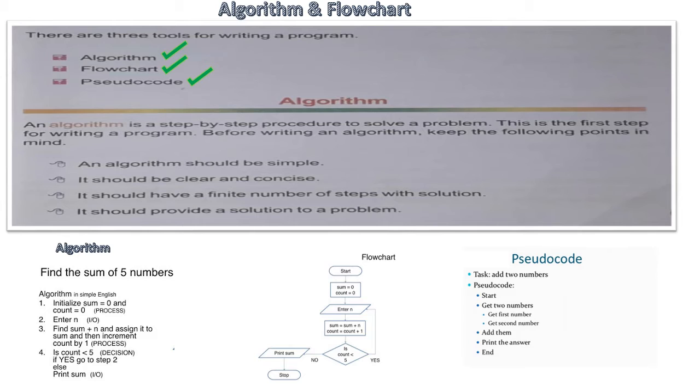Algorithm is the first step for writing a program. We have to keep the following points in mind before writing an algorithm. An algorithm should be simple. It should be clear and concise. It should have a finite number of steps with the solution.